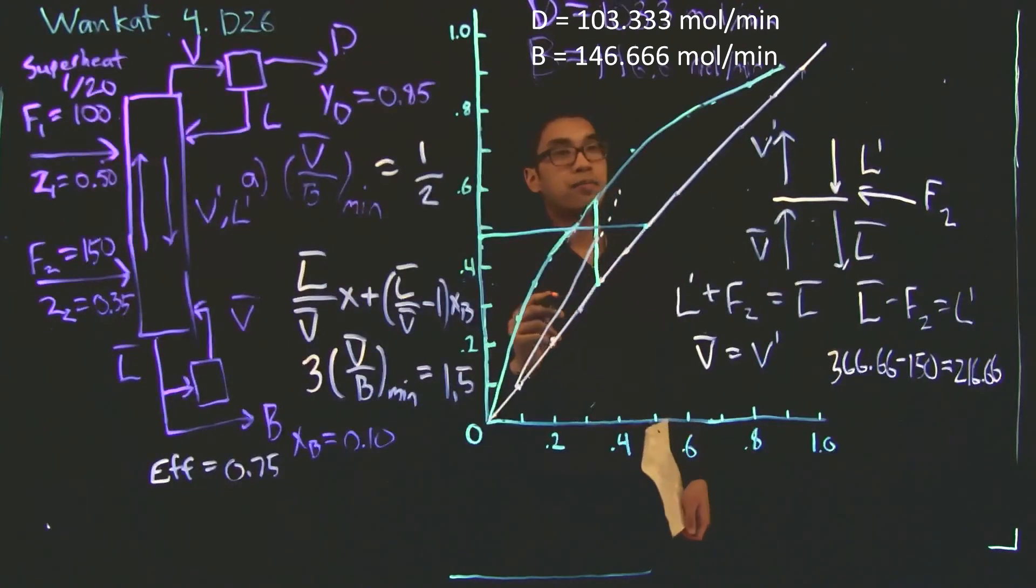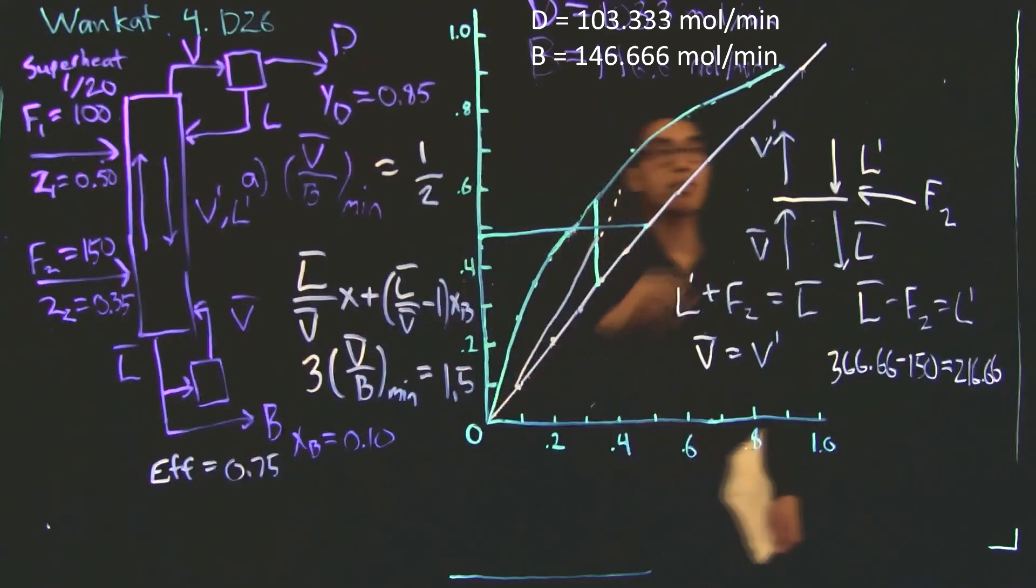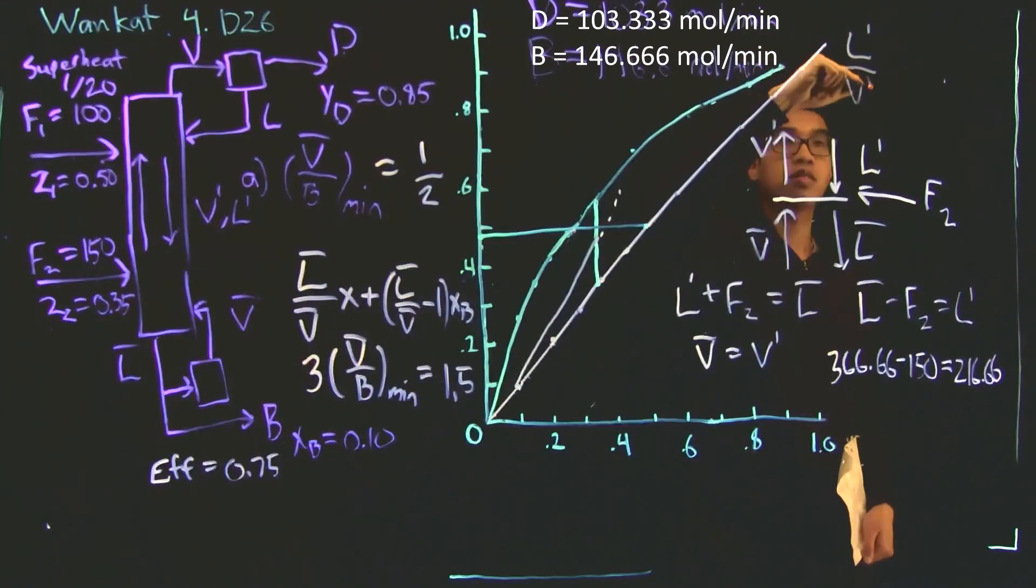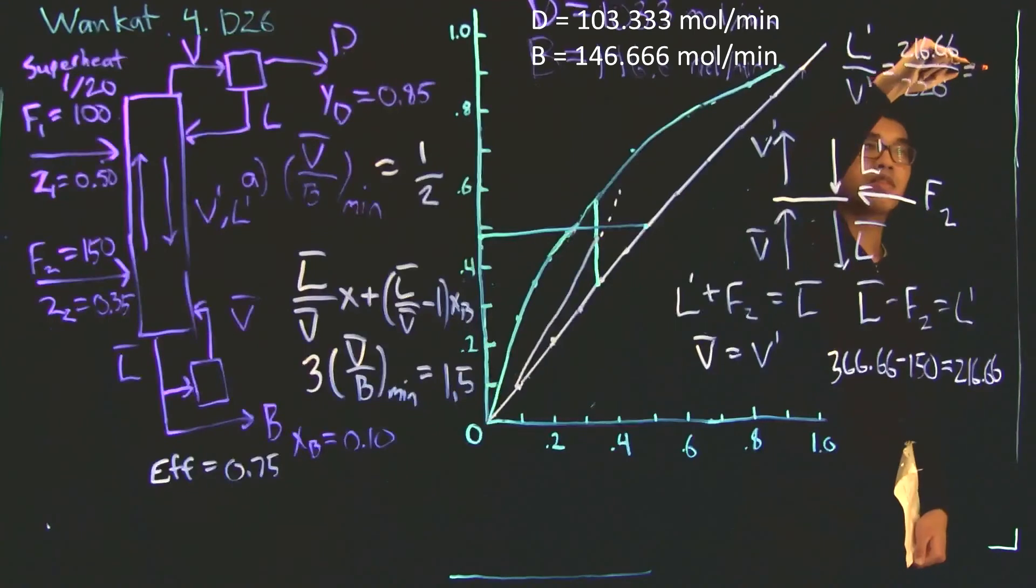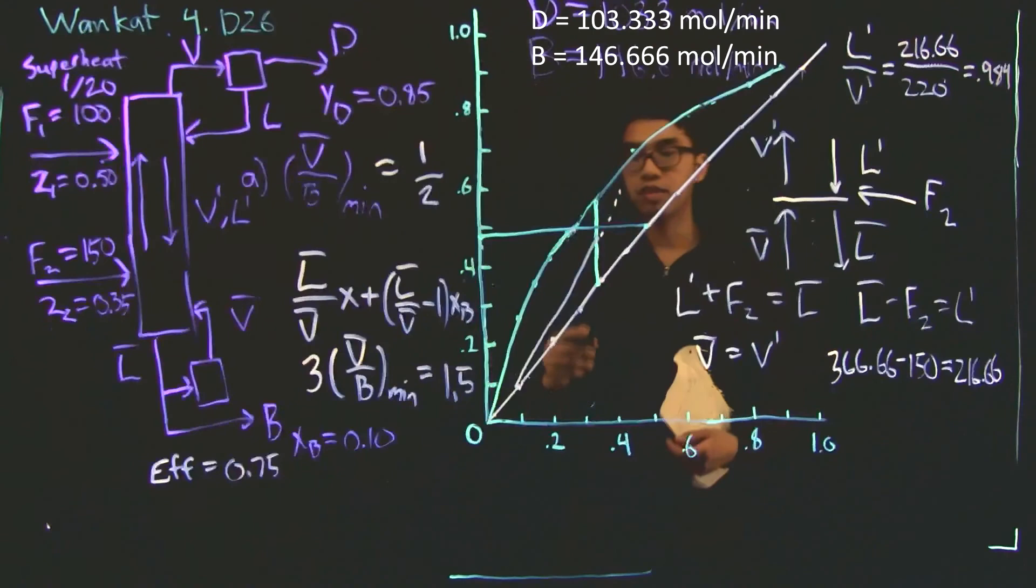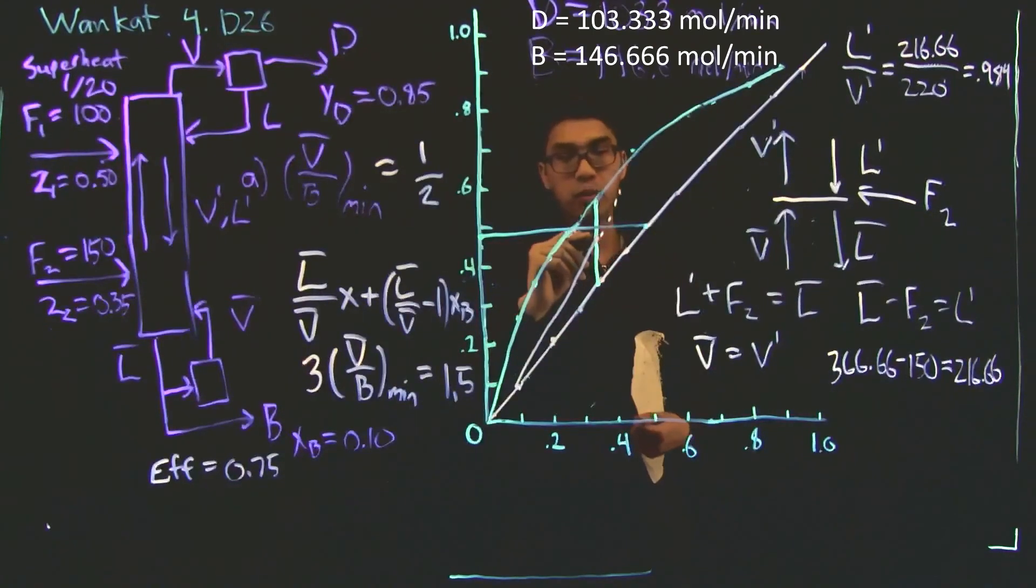So the L prime over V prime ratio is equal to 216.66 over 220, which is equal to 0.984. And so on this graph, it would be almost parallel with the x-y line, but with a slightly smaller slope. And so it would look something like this. And so the intersection point is here.